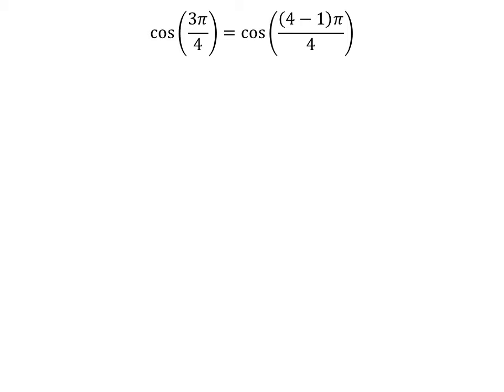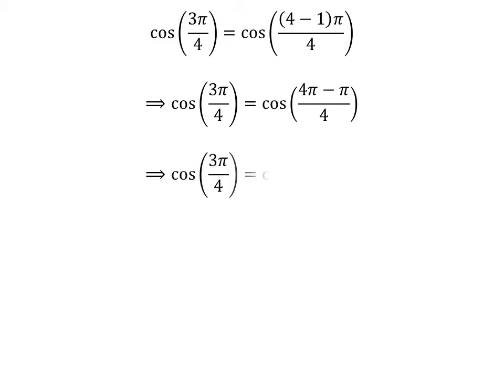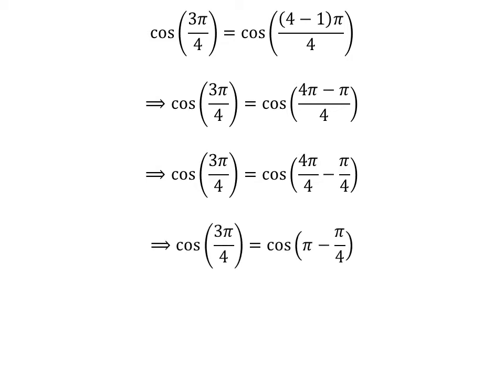We know 4 minus 1 is equal to 3. So cosine of 3 times pi upon 4 is equal to cosine of 4 minus 1 times pi upon 4. Expanding the numerator, we get cosine of 3 times pi upon 4 is equal to cosine of 4 times pi minus pi upon 4. The fraction 3 times pi upon 4 can be expressed as the difference of two fractions: 4 times pi upon 4 and pi upon 4. Cancelling out the common factor in the numerator and the denominator gives us cosine of 3 times pi upon 4 is equal to cosine of pi minus pi upon 4.